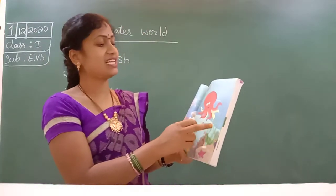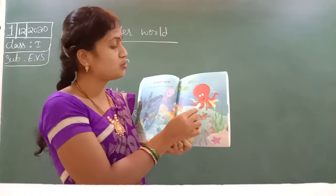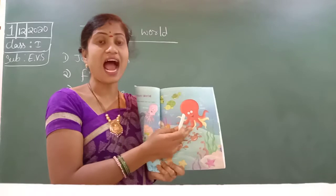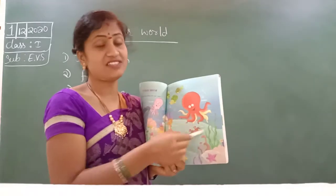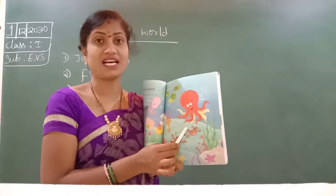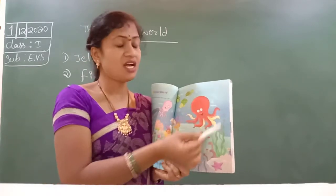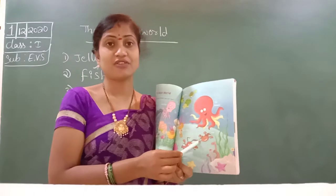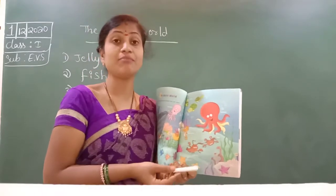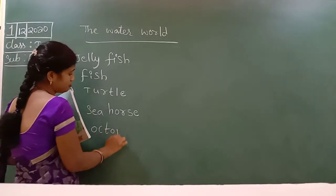Next, octopus. See — octo means eight. One, two, three, four, five, six, seven, eight. It has eight arms. That's why it got the name octopus. Octo means eight, it's looking like eight arms. That's why it got the name octopus.